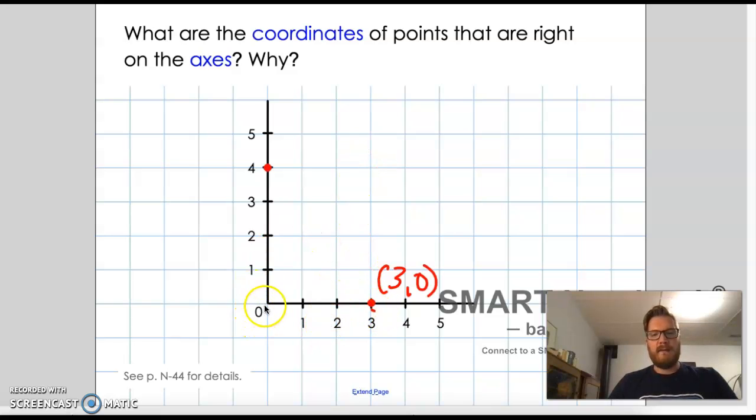This one, it doesn't go over at all. And so that first number becomes a zero and then it's up four. So that's how we would write those. And that's where those numbers will get plotted. If one of the numbers is zero, it's going to be right on one of the axes.